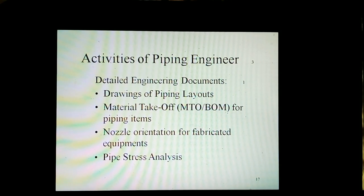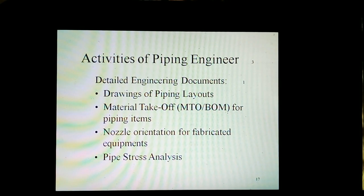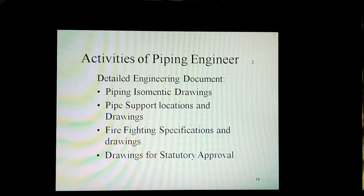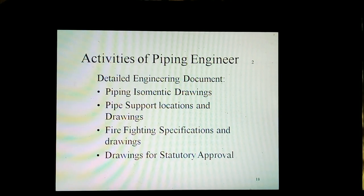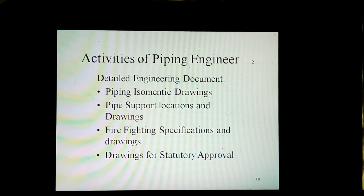Detailed engineering documents include drawings of piping layouts, material takeoff (MTO) and BOM for piping items, nozzle orientation for fabricated equipment, and pipe stress analysis. They also include piping isometric drawings, pipe support locations and drawings, fire protection specifications and drawings, and drawings for statutory approval.